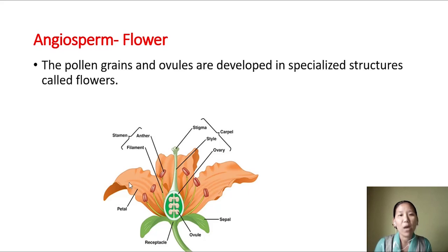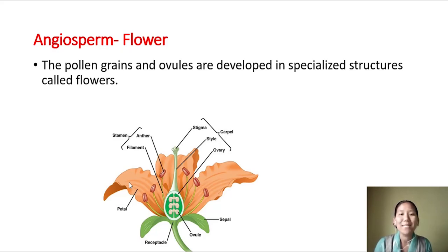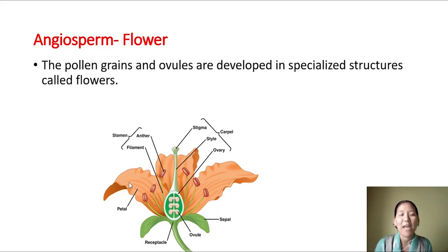A plant may have a flower bearing both the male organ and female part; such flowers are bisexual flowers. Or there may be a group of angiosperms where the flower contains either the male part or female part - such flowers are unisexual flowers. The male flower is called staminate and the female flower is called pistillate.